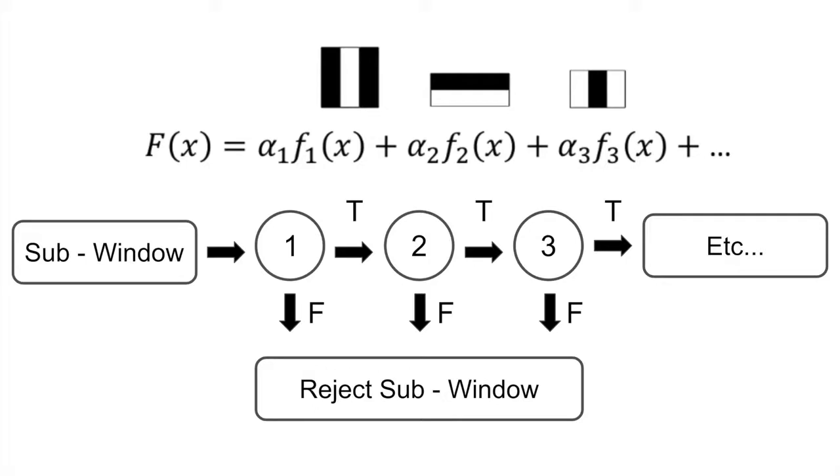Cascading is helpful because instead of looking for every feature, even if one is not even there, it will move on to the next box, therefore saving time.